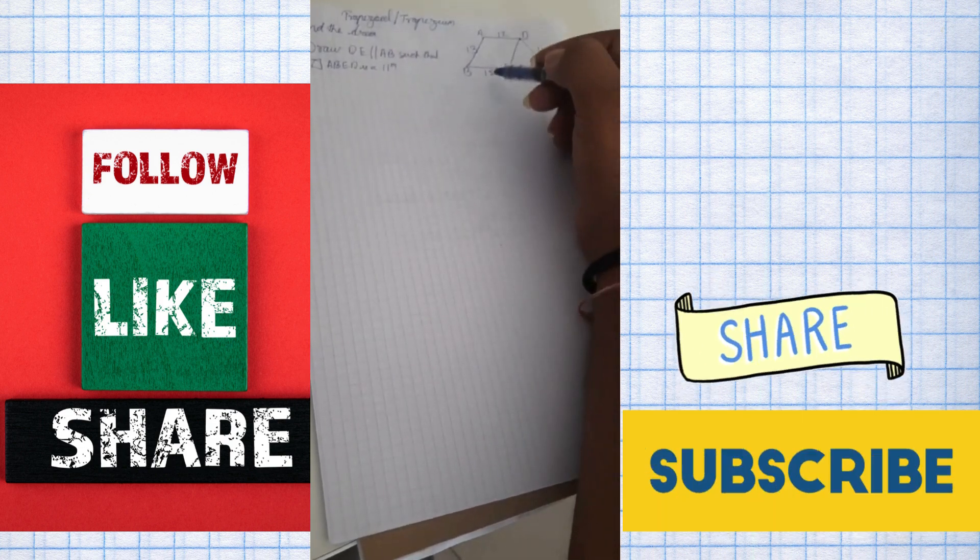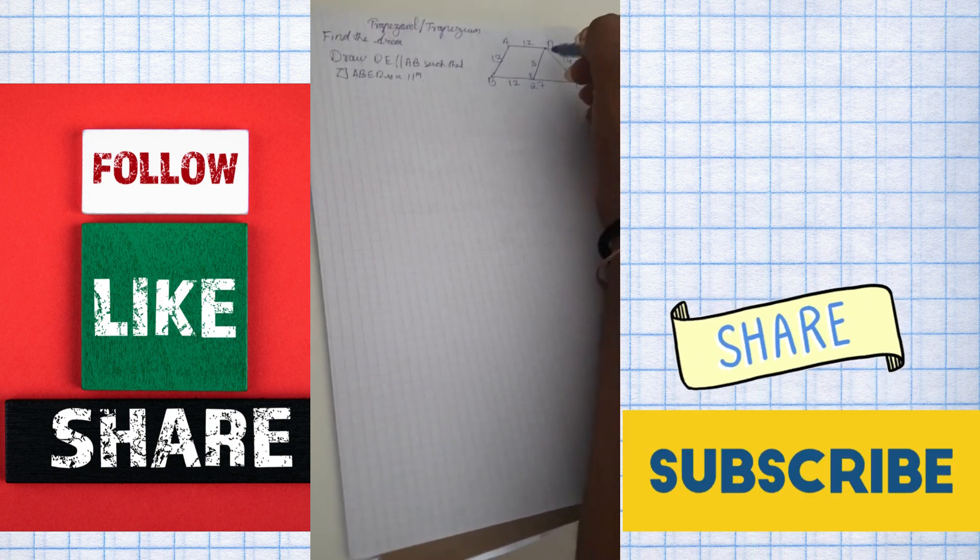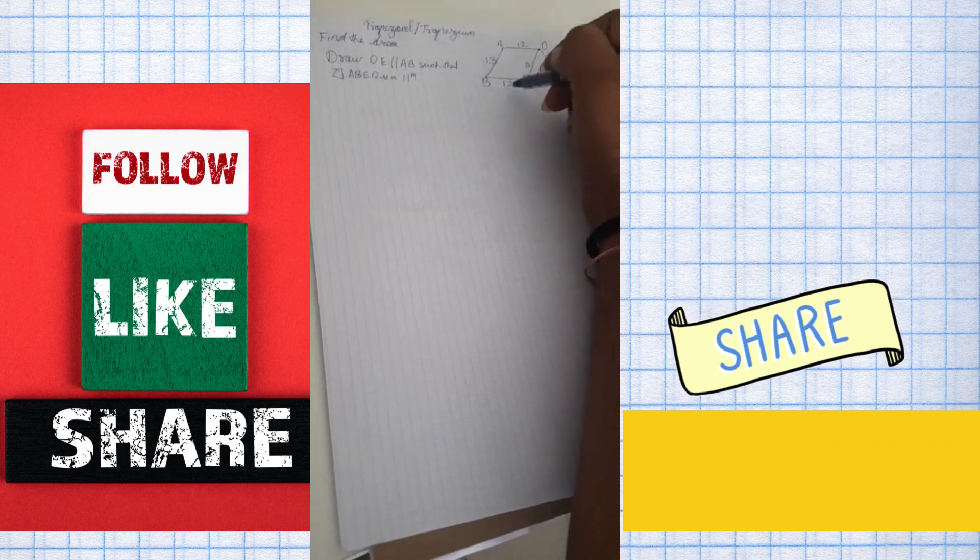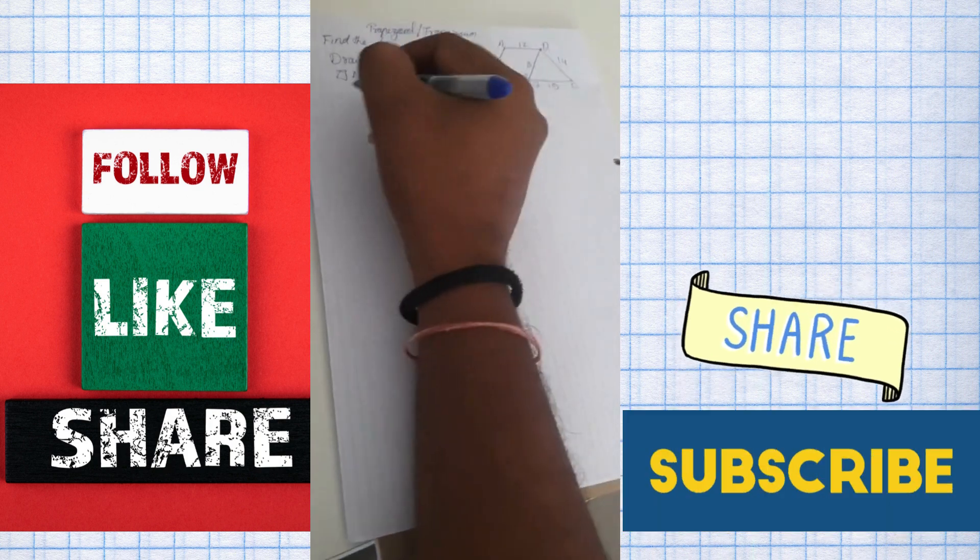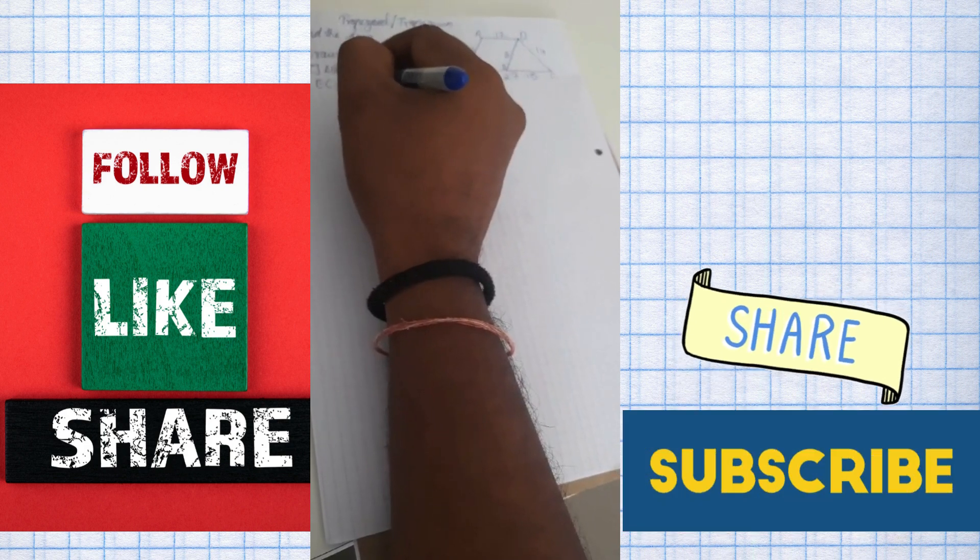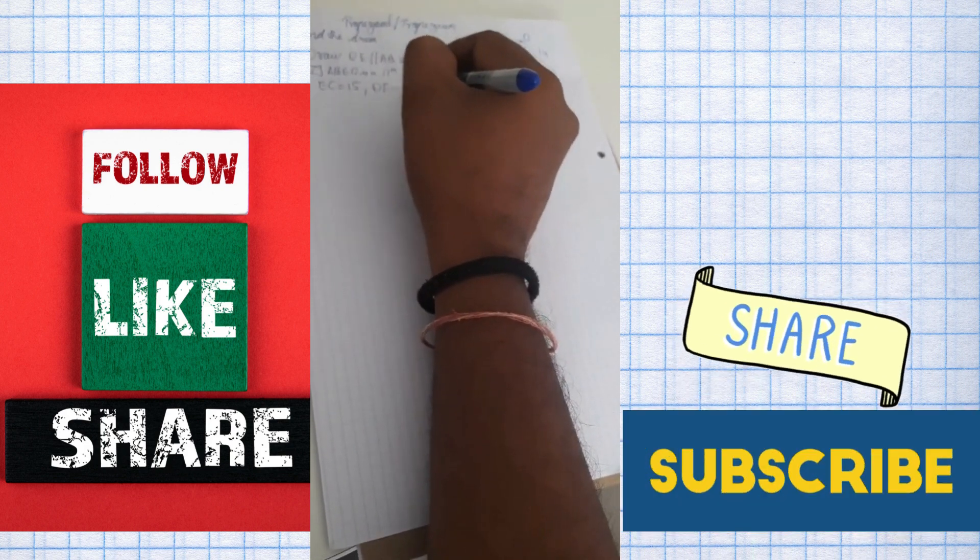Now we understand this is 12, this is 12, this is 13. Whereas if this is 12, from 27 if you minus 12, you will get 15. So EC is 15 and DE is 13.